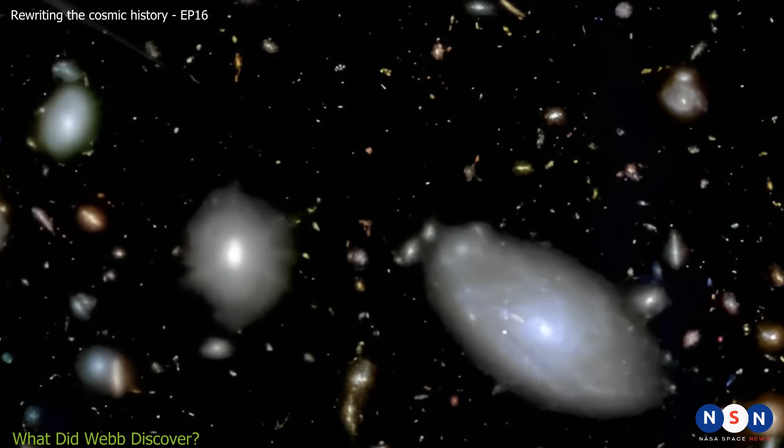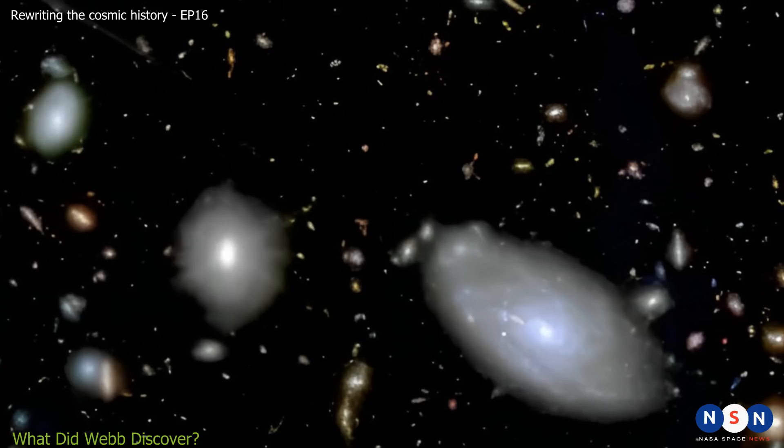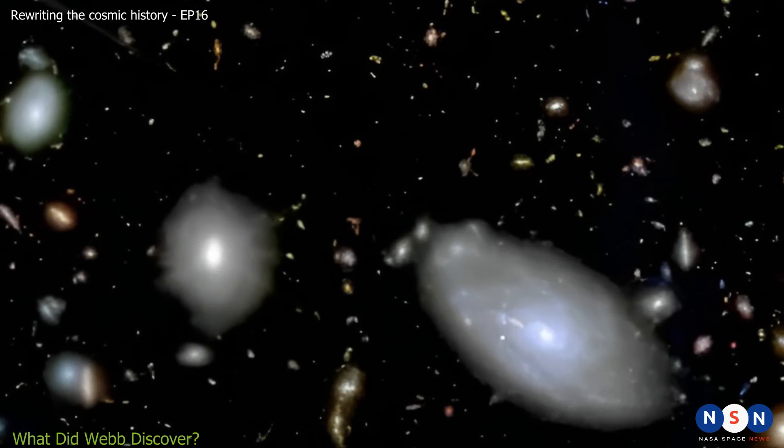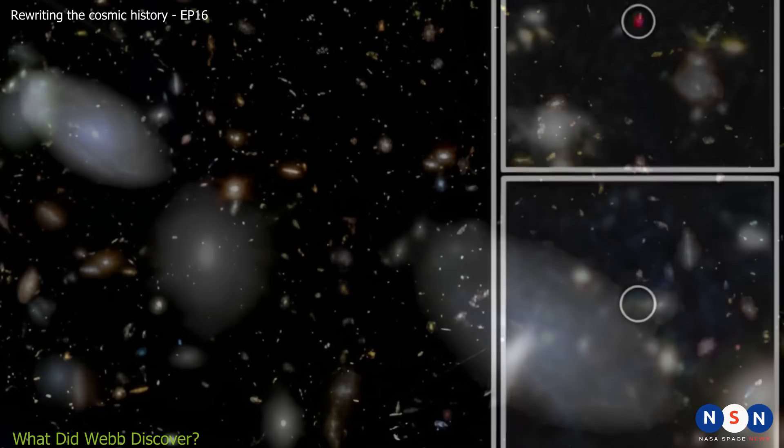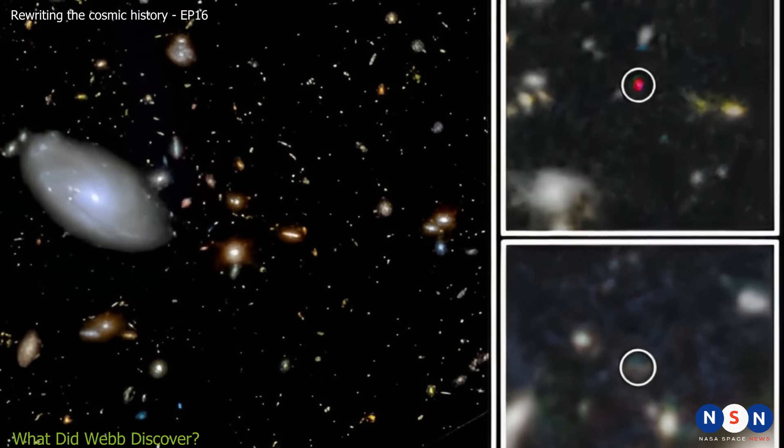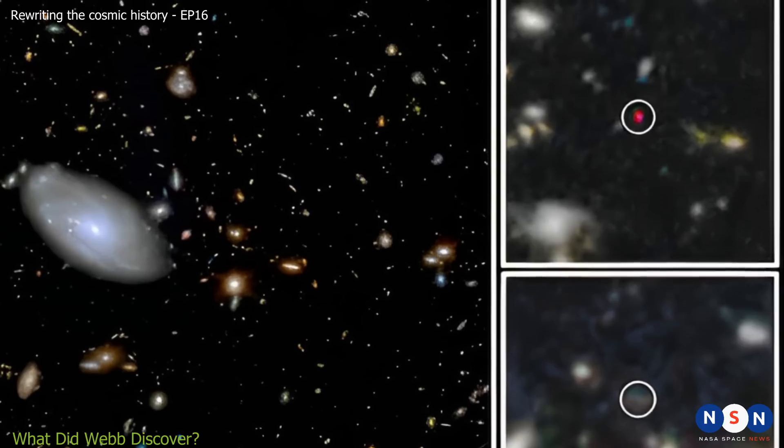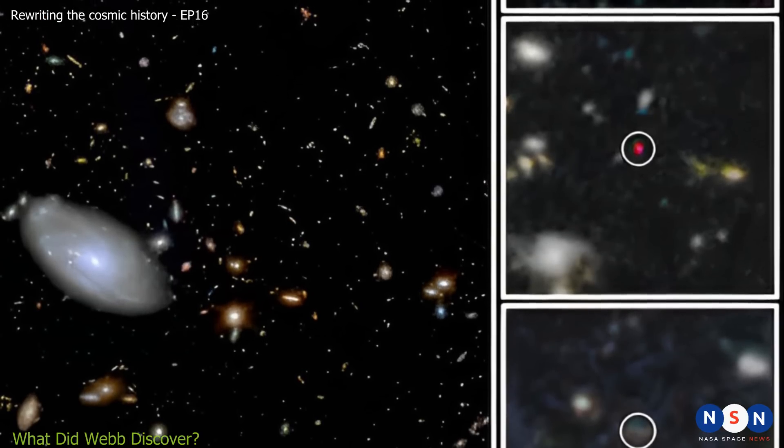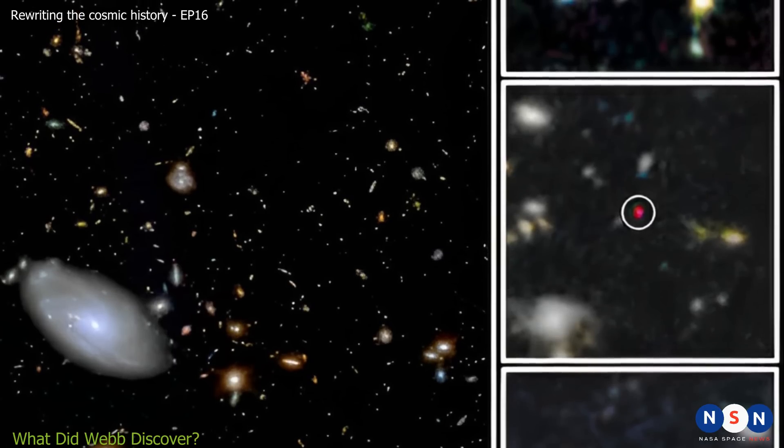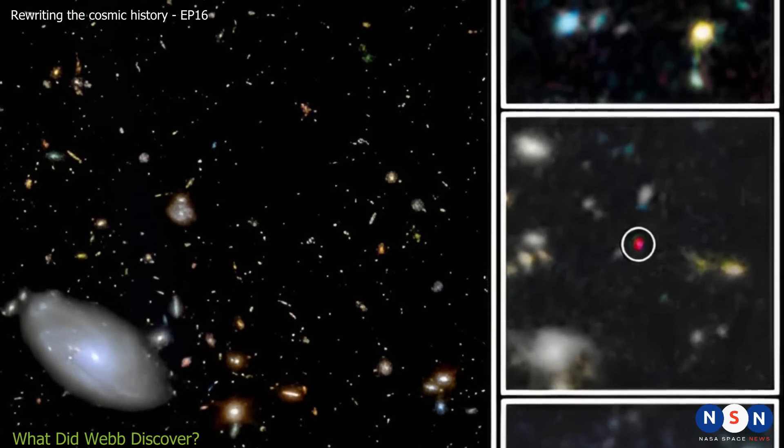On the left, you can see a deep field view of the cosmos with vivid spiral galaxies in the foreground, and a plethora of much older galaxies in the distance. Pretty much all these objects are galaxies. On the right, you can see zoomed-in views of three of the highly red-shifted galaxies releasing unexpected amounts of energy. They would have been formed in the first 200 to 500 million years after the Big Bang, when the universe age was 1-5% of today's age.